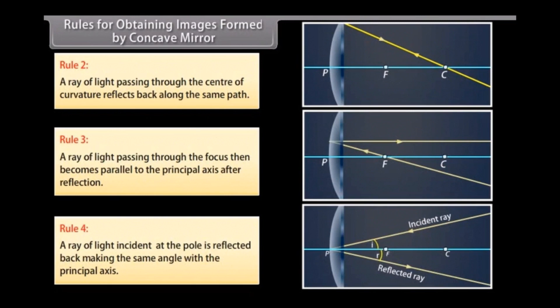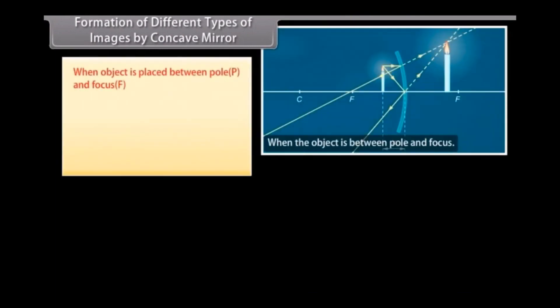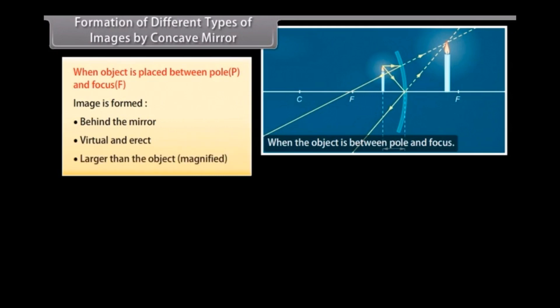Rule 4: A ray of light incident at the pole is reflected back making the same angle with the principal axis. When the object is placed between the pole P and focus F, the image is formed behind the mirror — virtual and erect, and larger than the object (magnified).